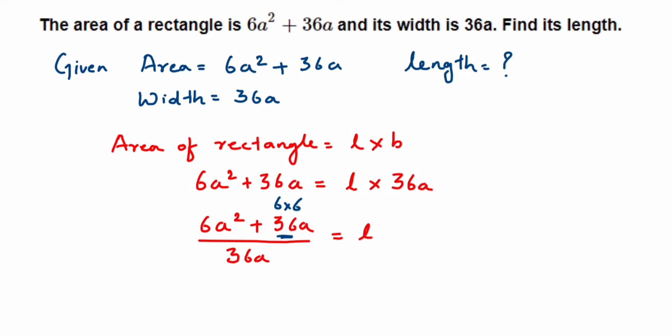Yeah, 6 × 6 is 36. So if I take common here, one 6 is common—6 and 6 we can take—and here we have